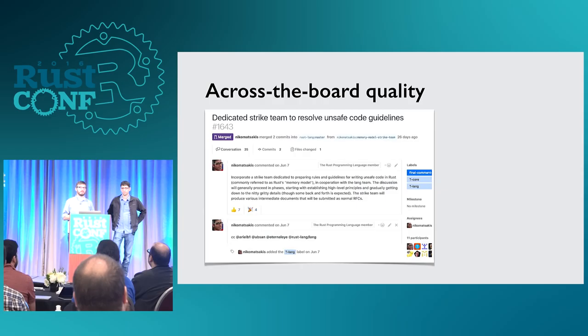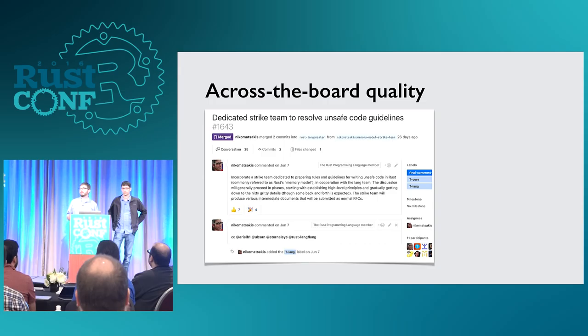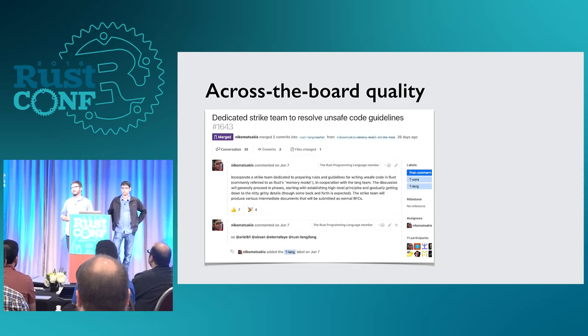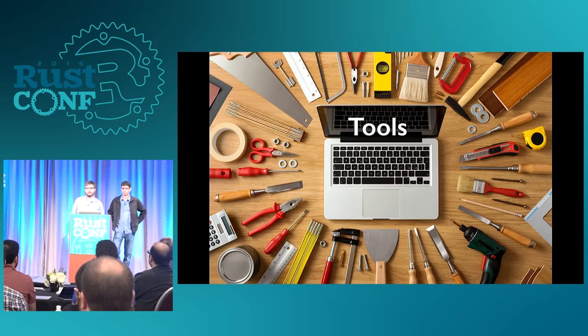Looking more at the code itself, there are important questions about Rust the language as you're developing a library — particularly if you're writing unsafe code: what can you assume about safe code, what do you have to guarantee, will future versions of Rust break your unsafe code? We've recently formed a strike team to start laying out some of these guidelines and specifying core pieces of Rust. It's a long haul and really hard work, but vital to the long-term quality of the ecosystem. We should also look at restarting the API conventions documentation.